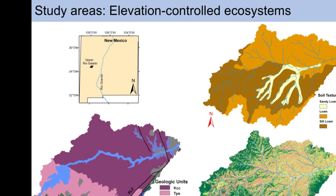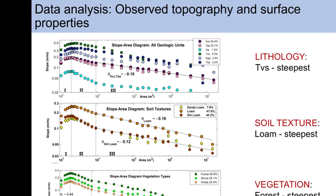Looking at an elevation-controlled ecosystem — Upper Rio Salado, 170 miles west of Sevilleta — the basin has different formations, soil texture types, and vegetation. Higher elevations are mostly occupied by forest, while lowland areas have either shrub or grass. We looked at slope-area diagrams comparing lithology: tertiary volcanic sediments. There is stratification — loam forms are the steepest. Especially for vegetation: forests are steeper than shrub, and grassland is the gentlest.